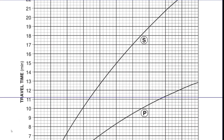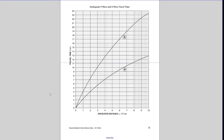Now let's run through this chart. You've got two axes of information. The epicenter distance on the bottom shows how far away the earthquake was — it's times 10 to the 3rd kilometers, so each unit is 1,000, meaning 1,000, 2,000, 3,000, and so on. Each little line is 200 kilometers. The travel time on the left shows how long the wave was traveling — 1 minute, 2 minutes, 3 minutes, 4 minutes — and the little lines are 20 seconds each.